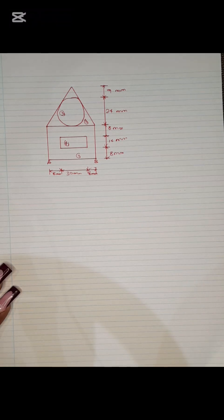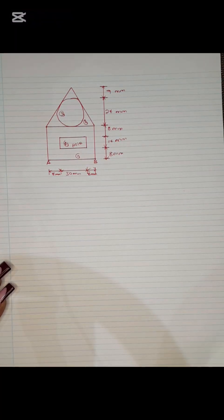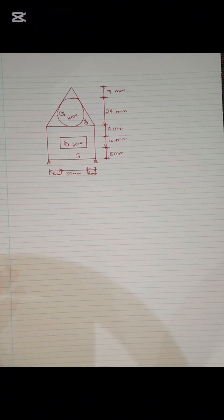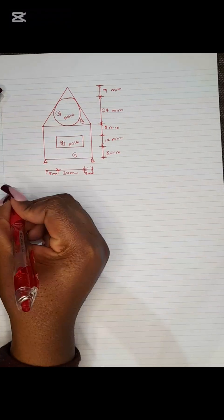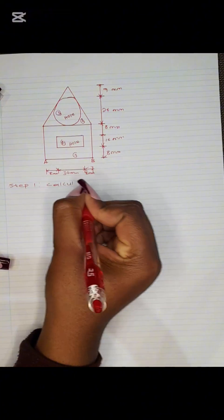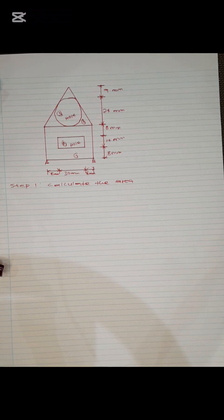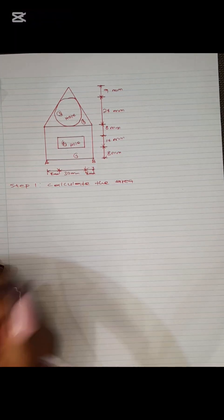These two shapes that are inside the other shapes we call them holes — because they are inside other shapes. Being holes means their area is going to be negative. When you calculate the area of these two, they are supposed to be negative because they are holes inside other shapes. So Step 1: calculate the area of Shape 1, Shape 2, Shape 3, and Shape 4.